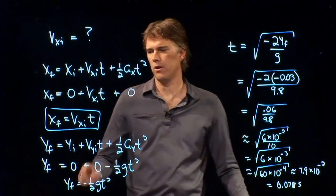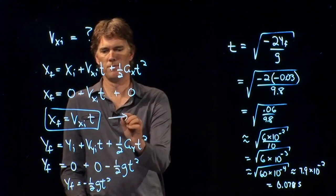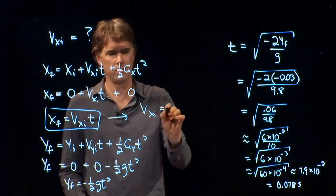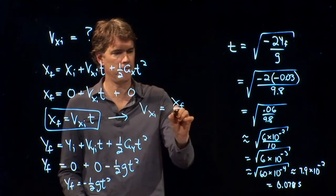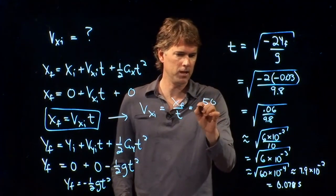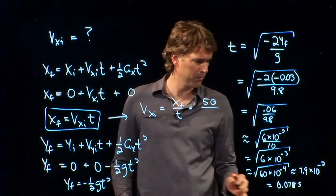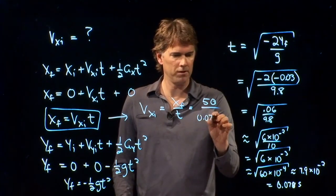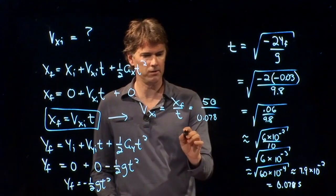And now we want to solve for v. What is the speed coming off? v_xi = x_f/t. x_f we know is 50. And we are now dividing by 0.078. Tell me what you guys get for that.